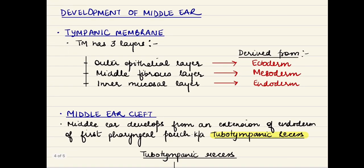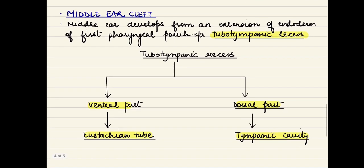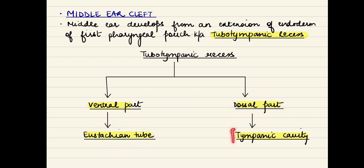Now progressing to the development of the middle ear. The tympanic membrane, as already discussed, is formed from all three germinal layers. The adult tympanic membrane has three layers: the outer epithelial layer from ectoderm, the middle fibrous layer from mesoderm, and the inner mucosal layer from endoderm. It is the only structure in the human body derived from all three germinal layers. The middle ear cleft comprises the eustachian tube, the tympanic cavity, the aditus, and the mastoid antrum. The middle ear develops from an extension of the endoderm of the first pharyngeal pouch, known as the tubotympanic recess. This recess divides into a ventral part, which forms the eustachian tube, and a dorsal part, which forms the tympanic cavity.